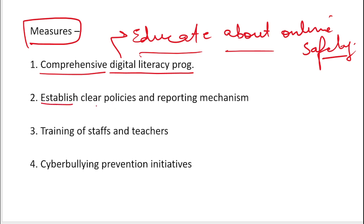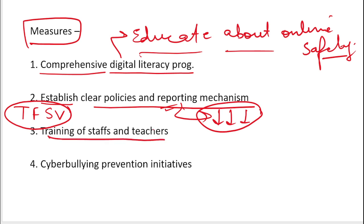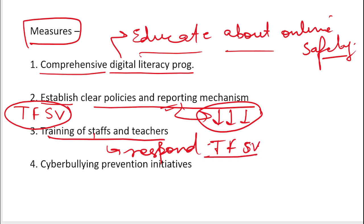Secondly, we need to establish clear policies and reporting mechanisms. Many times the policies around technology-facilitated violence are unclear, there are loopholes, and criminals exploit them. Reporting is very low — it is nearly negligible — so we need to improve reporting mechanisms. Thirdly, training for staff and teachers: they need to be trained to know how to respond appropriately to TFSV incidents.